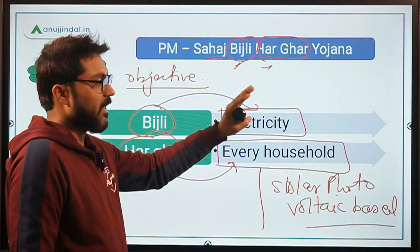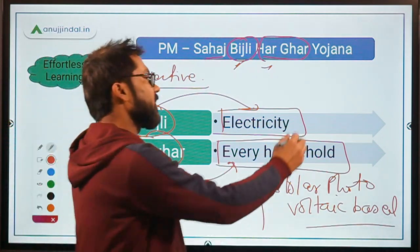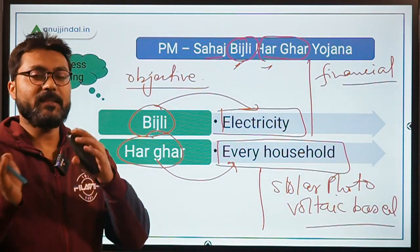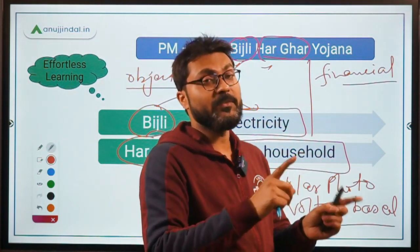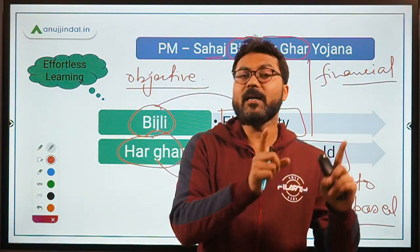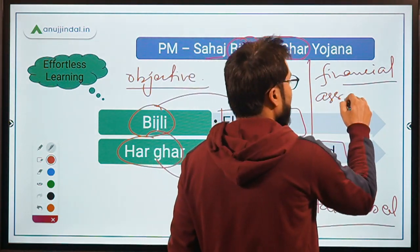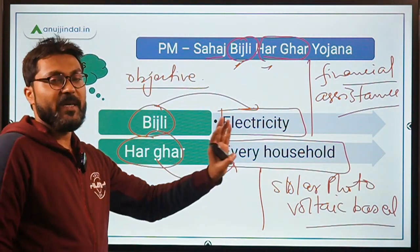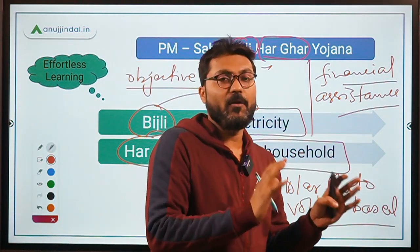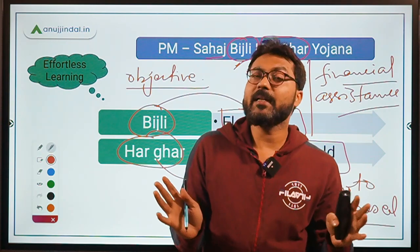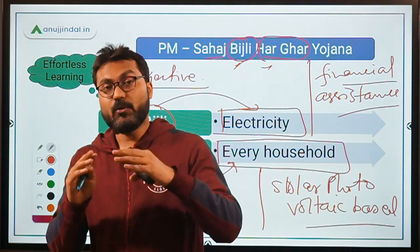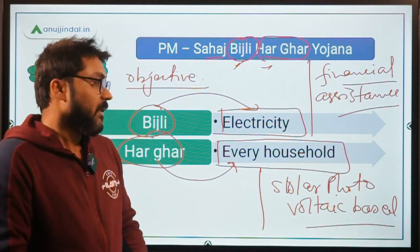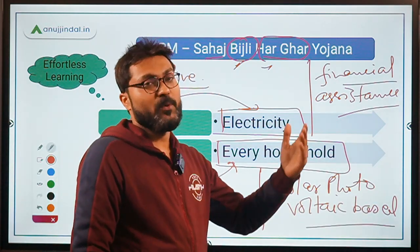This objective will be completed by providing financial assistance, which in turn will provide free electricity to the eligible households. Financial assistance will be provided to the distribution companies. The basic objective is to provide electrification to all unelectrified households in our country, and for inaccessible and remote areas, solar photovoltaic-based standalone plants will be provided through this scheme.